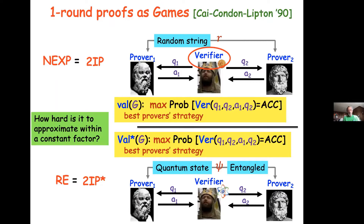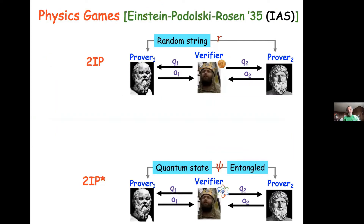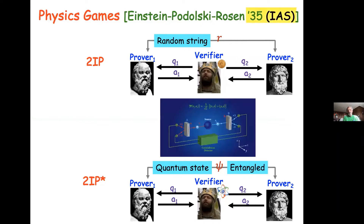Physics defined the same models long ago — starting at the Institute where I work, by Einstein and his postdoc Podolsky and Rosen. If you squint, you can see in the famous EPR experiment the description of sending entangled photons in opposite directions, with two measurements on the two sides. This is formally very similar. In physics, the classical setting was called local hidden variable theory, and the quantum non-local game is the quantum analog.